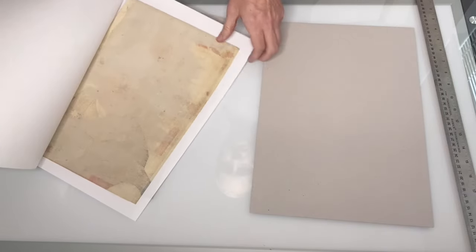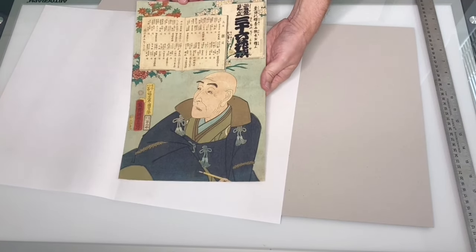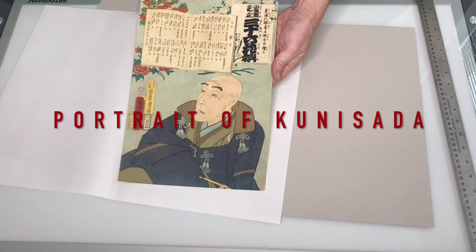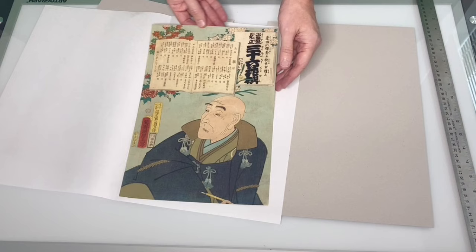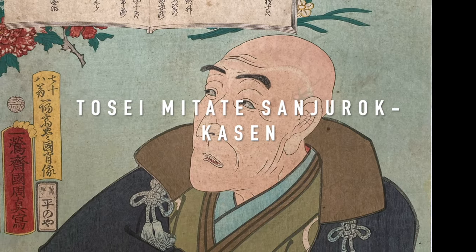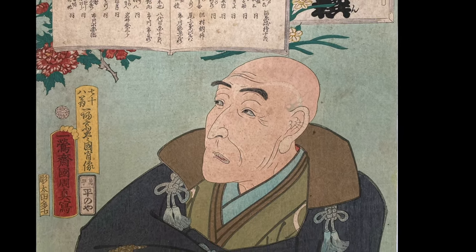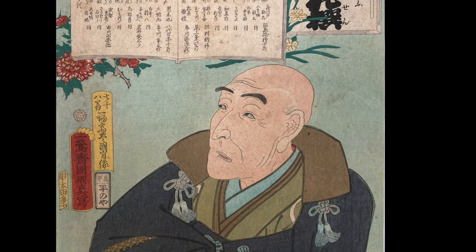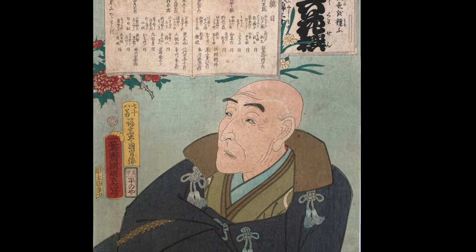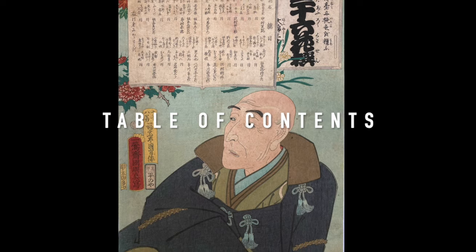This is a portrait of the famous artist Kunisada, also known as Toyukuni III. It's from Kunisada's 1863 series Tousei Mitate 36 Kassen, or A Modern Comparison of 36 Flowers. The twist is that this is the only print in the series not done by Kunisada — it's by Kunichika. It's the table of contents for the series.